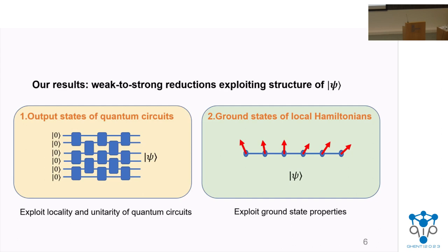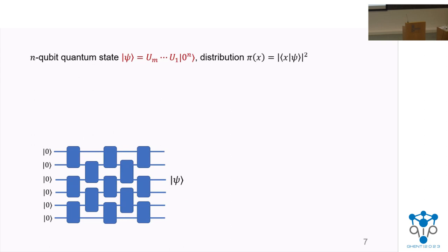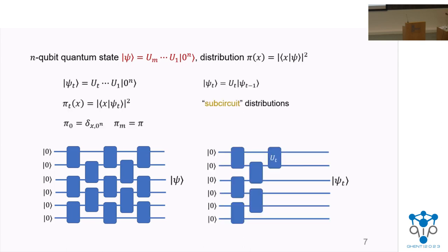I'll tell you about our results on weak-to-strong reductions that benefit from assumptions made on ψ in two settings. First, I'll describe our sampling algorithm for sampling from the output distribution of quantum circuits — the gate-by-gate algorithm. We assume ψ is the output state of a quantum circuit composed of m two-qubit gates U₁ through U_m. We define sub-circuit states ψ_t as the state obtained by applying gates U₁ through U_t to the all-zeros initial state, and each sub-circuit state induces a sub-circuit output distribution π_t. Note that π_0 always samples the all-zeros state, and π_m is the target distribution.